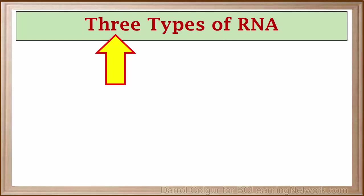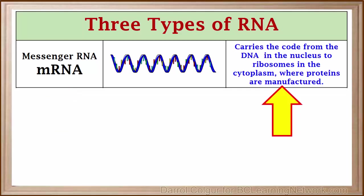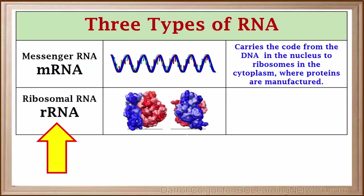Let's have a quick look at each one. The first type is called messenger RNA or mRNA. Messenger RNA carries the code from DNA in the nucleus to ribosomes in the cytoplasm. The code on mRNA is read by the ribosome and used as instructions to manufacture a specific protein.